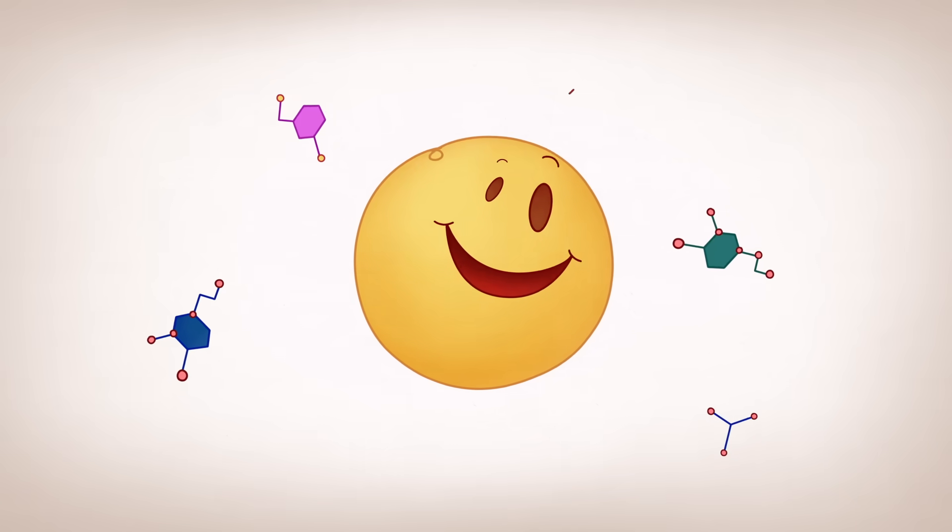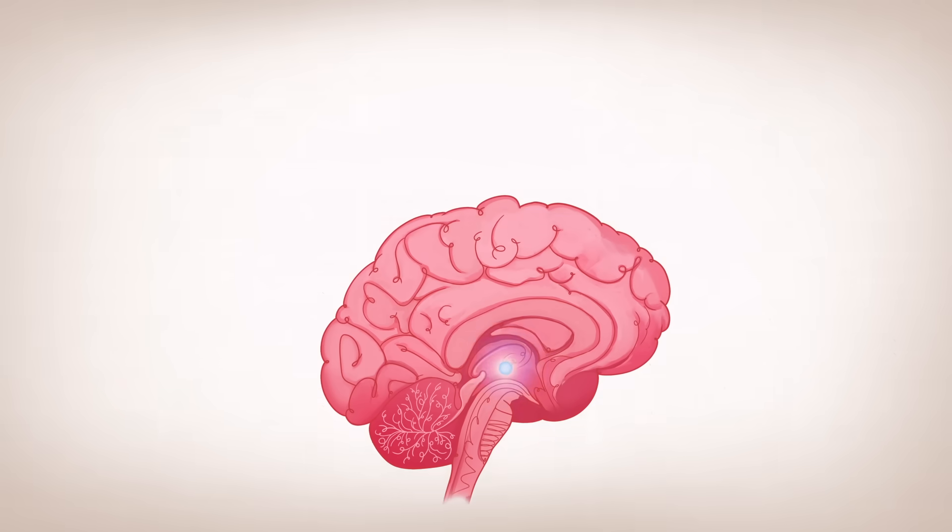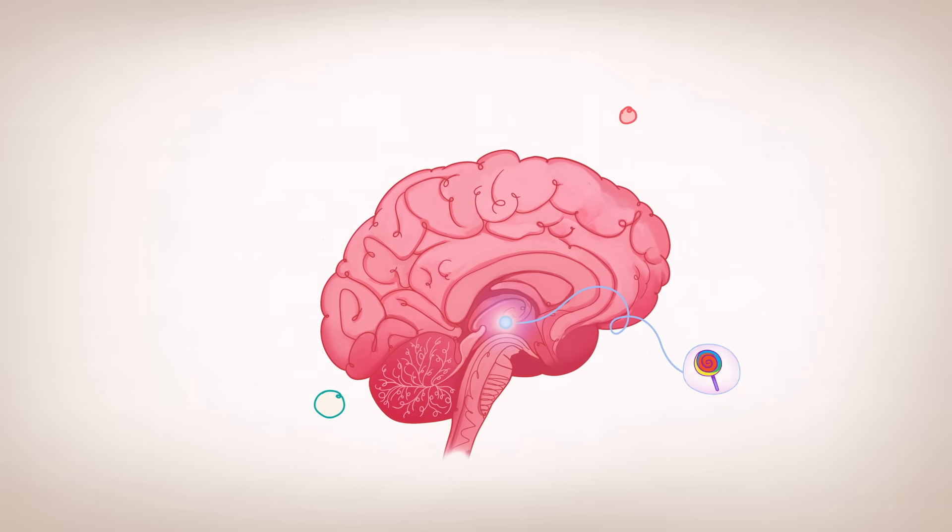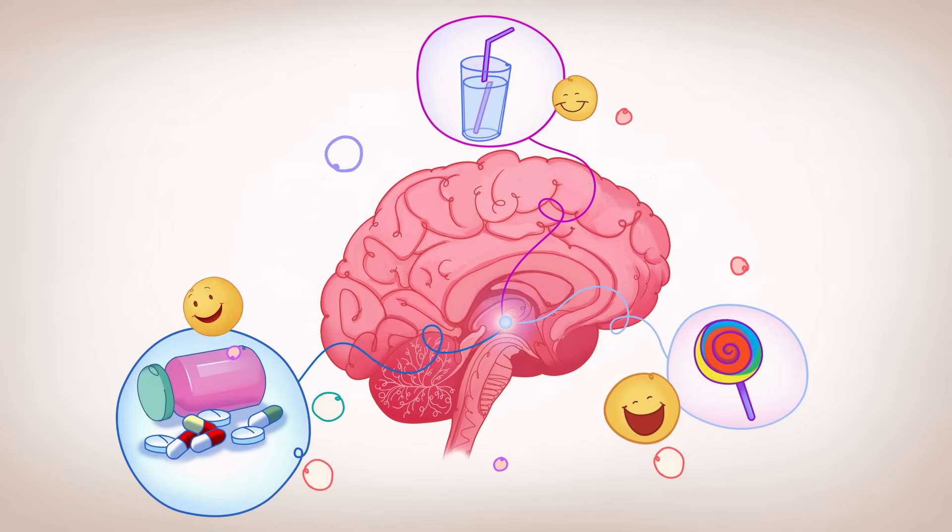Activation releases the feel-good neurotransmitter dopamine, teaching your brain to repeat behaviors in anticipation of receiving the same initial reward. This increased VTA activity is the reason love's not only euphoric, but also draws you towards your new partner.